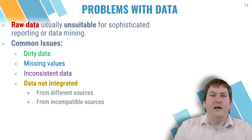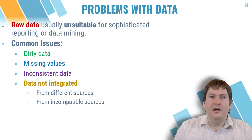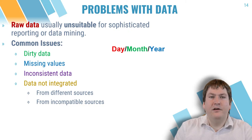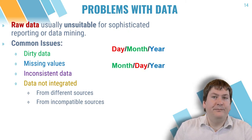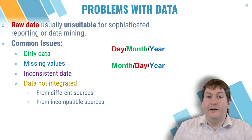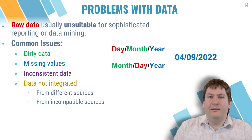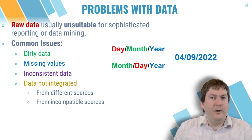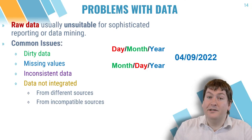Data not being integrated correctly is another issue, and this is a common problem when dealing with data from different sources. For example, one system might have dates in day-month-year format, while another uses month-day-year format. If you merge these two sources together, you could end up with ambiguous dates. For instance, is a date showing 04/09 September 4th or April 9th? Without knowing the correct format, it's impossible to tell.